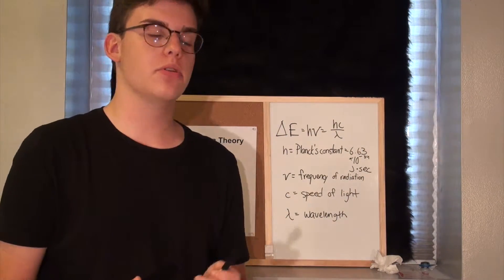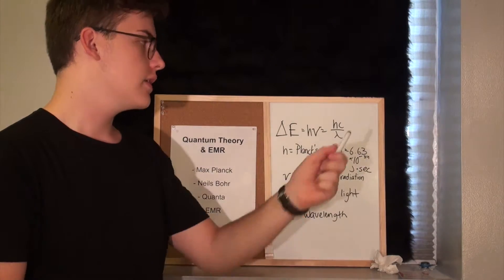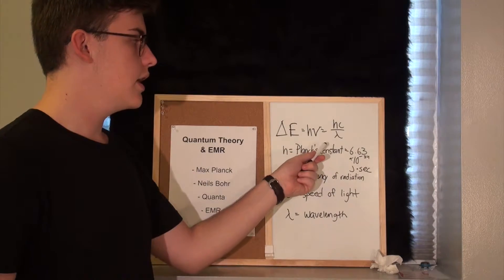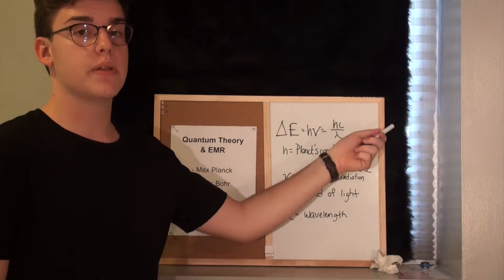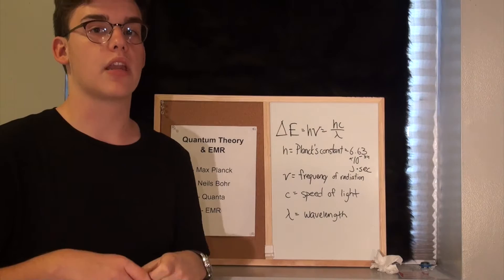Okay, so here is a principal equation in quantum theory. So you have delta E, or the change in energy, is equal to Planck's constant times the frequency of radiation, equals Planck's constant times the speed of light divided by the wavelength of the electromagnetic radiation.